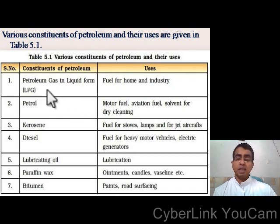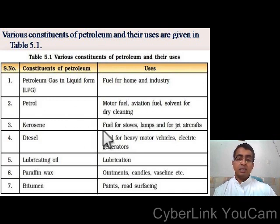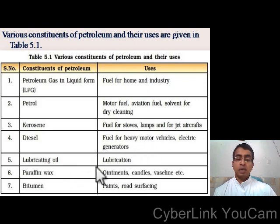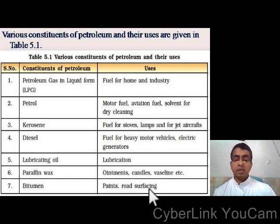Petroleum gas in liquid form, known as LPG, is used as fuel for home and industry. Petrol is used as motor fuel, aviation fuel, and solvent for dry cleaning. Kerosene is used as fuel for stoves, lamps, and for jet aircraft. Diesel is used as fuel for heavy motor vehicles and electric generators. Lubricating oil is used for lubrication. Paraffin wax is used for making ointments, candles, vaseline, etc. Bitumen is used for making paints and road surfacing.